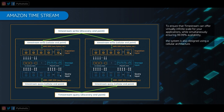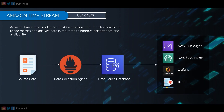Now let's discuss some use cases of Timestream. Taking the example of DevOps, Timestream can help monitor health and usage metrics and analyze data in real time to improve performance and availability. You can use Prometheus as your data collection agent, which gets stored and processed in Timestream and can be used for monitoring and real-time analysis. You can also integrate it with Amazon QuickSight for dashboards, AWS SageMaker, Grafana, or other data storage structures using object models.